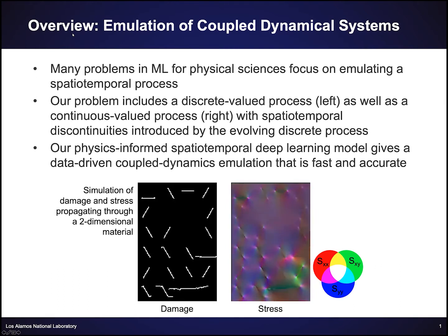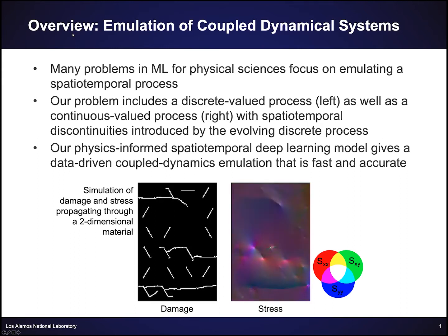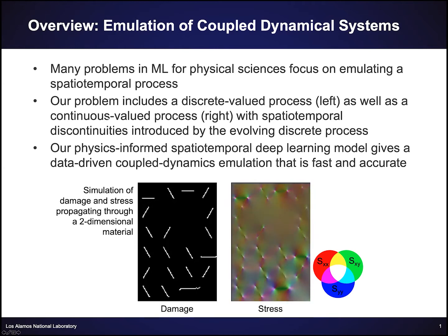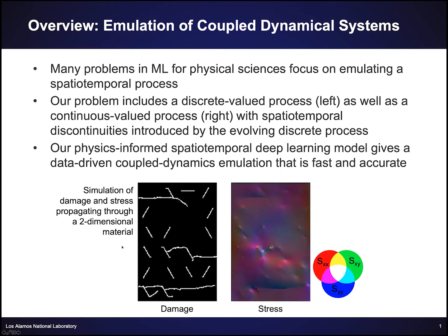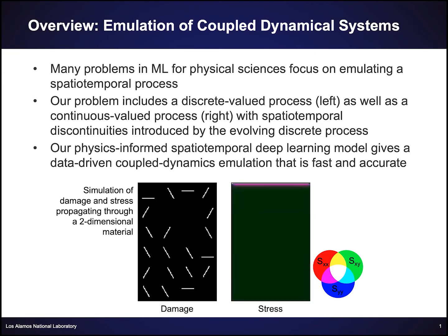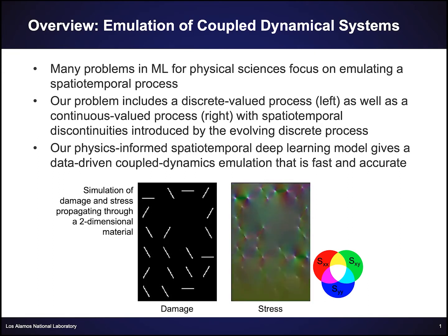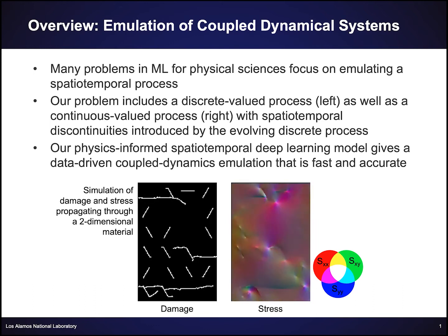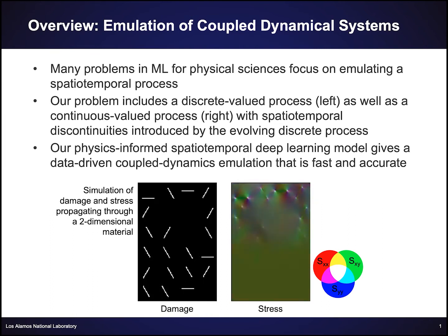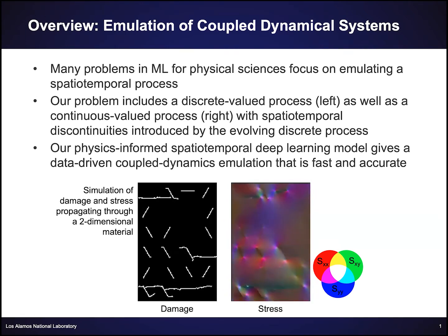What's different about our problem compared to most of the research out there is that we have both a discrete value process — fractures propagating through a 2D material, where the white lines are cracks — and a continuous value process, which is the stress itself. These are linked processes, but because the data is in such different forms, it's hard to learn a single PDE to represent all of the data. So instead we have a coupled system.